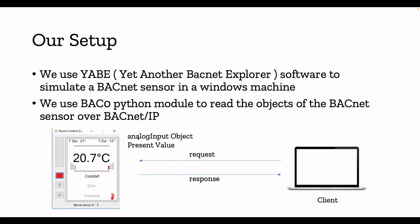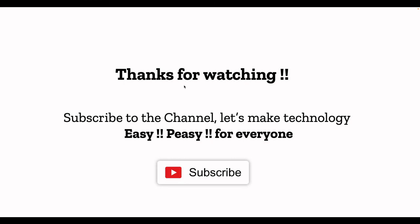We will then use BAC0, a Python module. We are going to write a Python script to read the objects of the BACnet sensor, dealing with the analog input object. We'll use the present value property to get data frequently. BACnet's default port is 47808 — though it can be changed, by default BACnet/IP connects on port 47808. We will make a request to the analog input object, get the present value response, and get the data. Thanks for watching — please subscribe. In part two we will do the hands-on portion of BACnet.